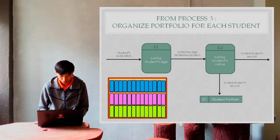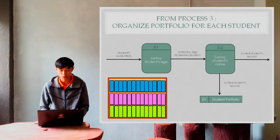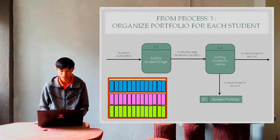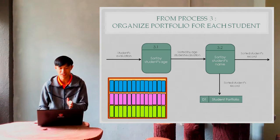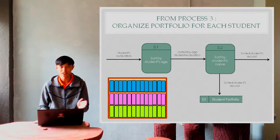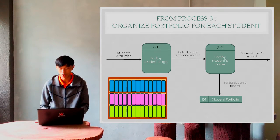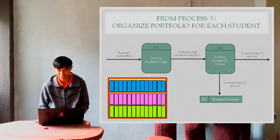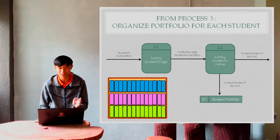Inside this, the student evaluation will go to process 3.1 which is sorting all the students by age: age four, five, and six. Then the sorted student evaluation by age will go to process 3.2 which is sorting the students' information by their names.